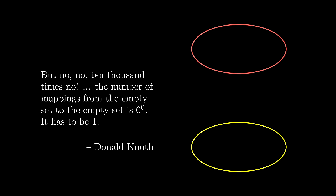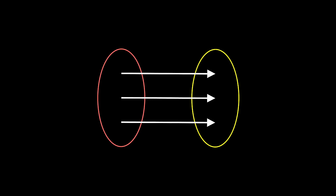What does it mean to map from one empty set to another empty set, and why is it related to 0 to the power of 0? Suppose we have two sets. How many ways can we map alpha, beta, and gamma to x and y?